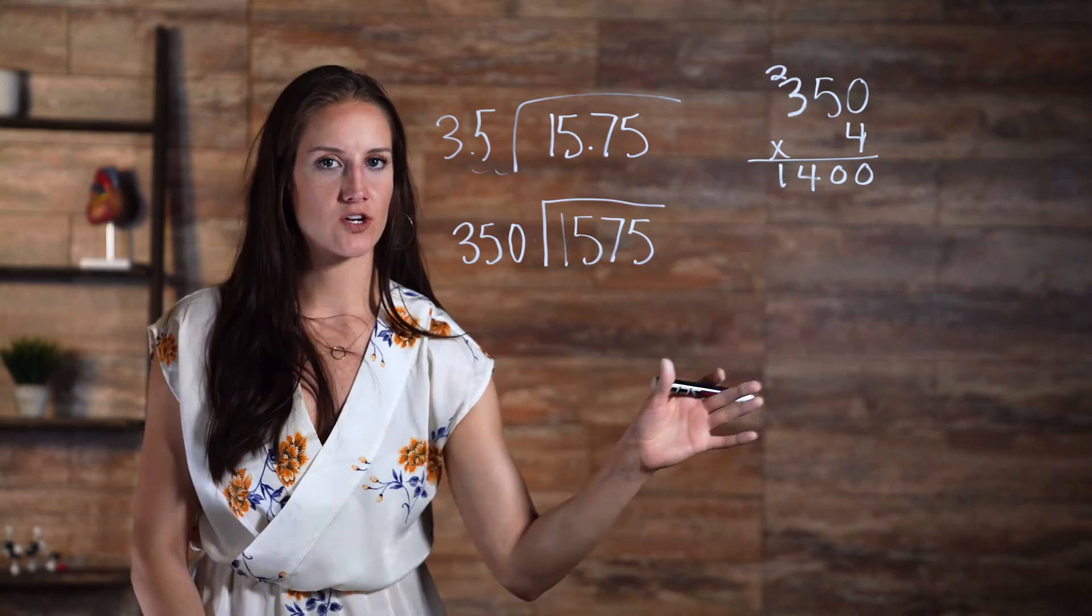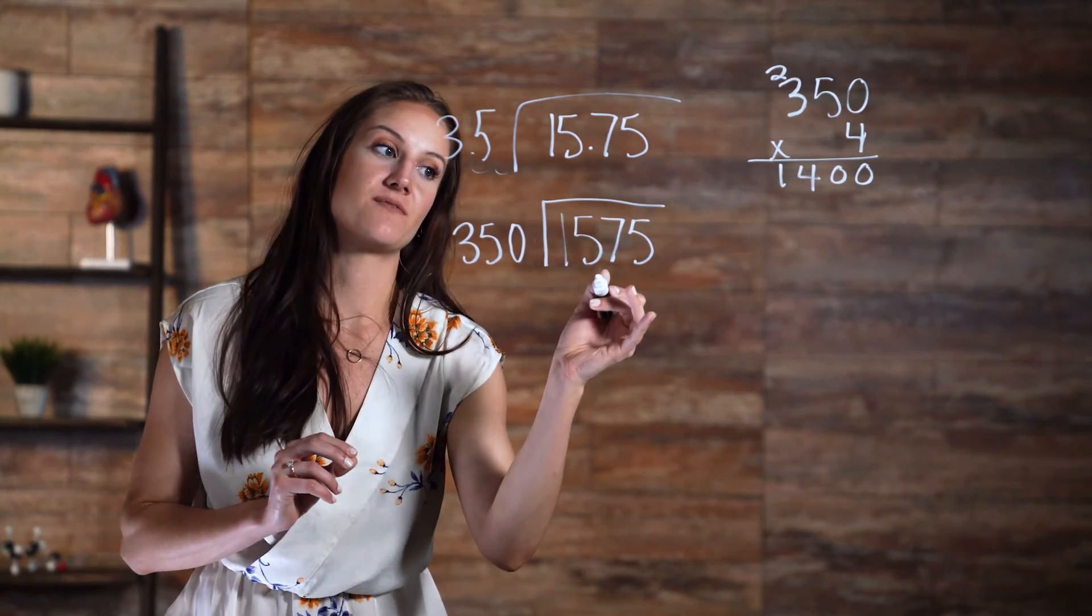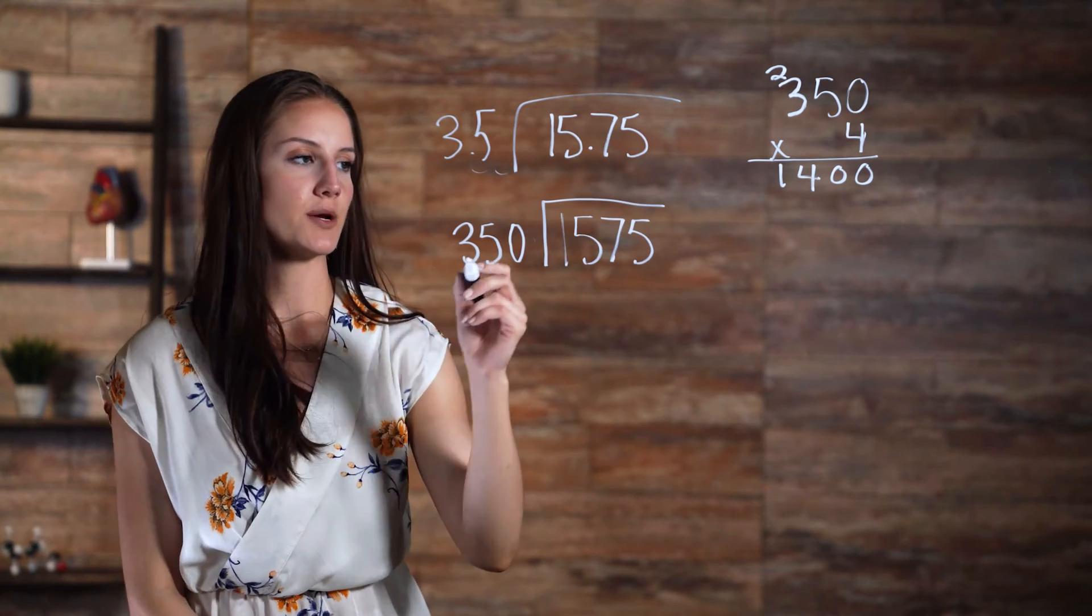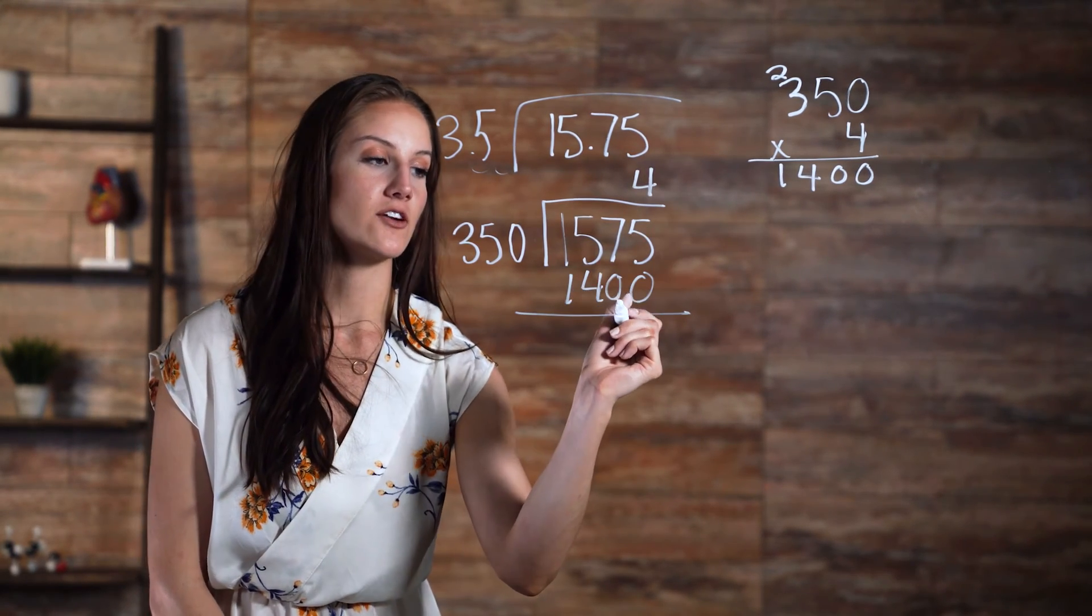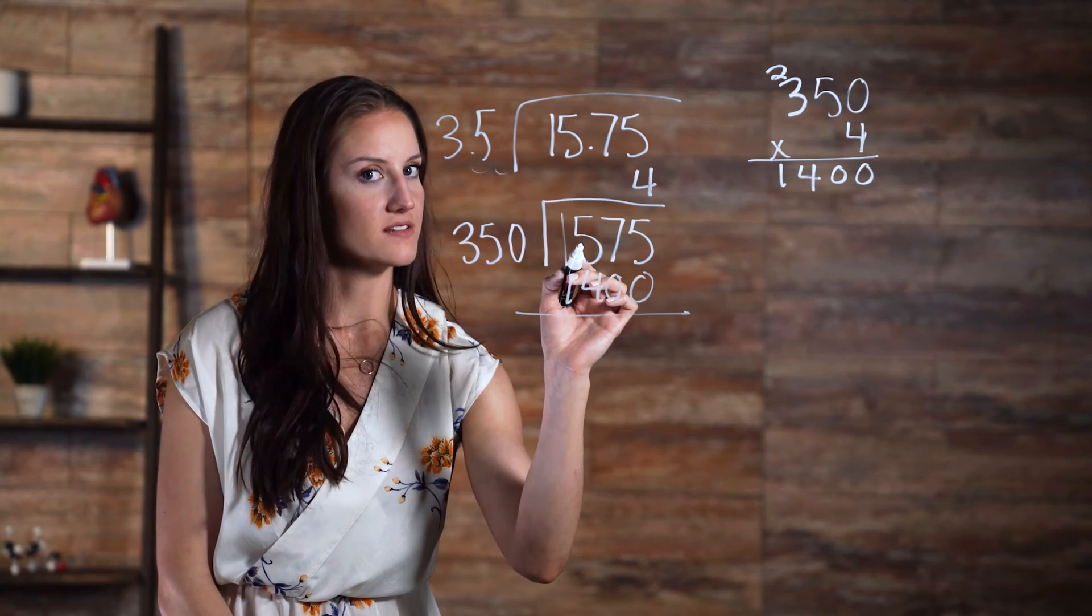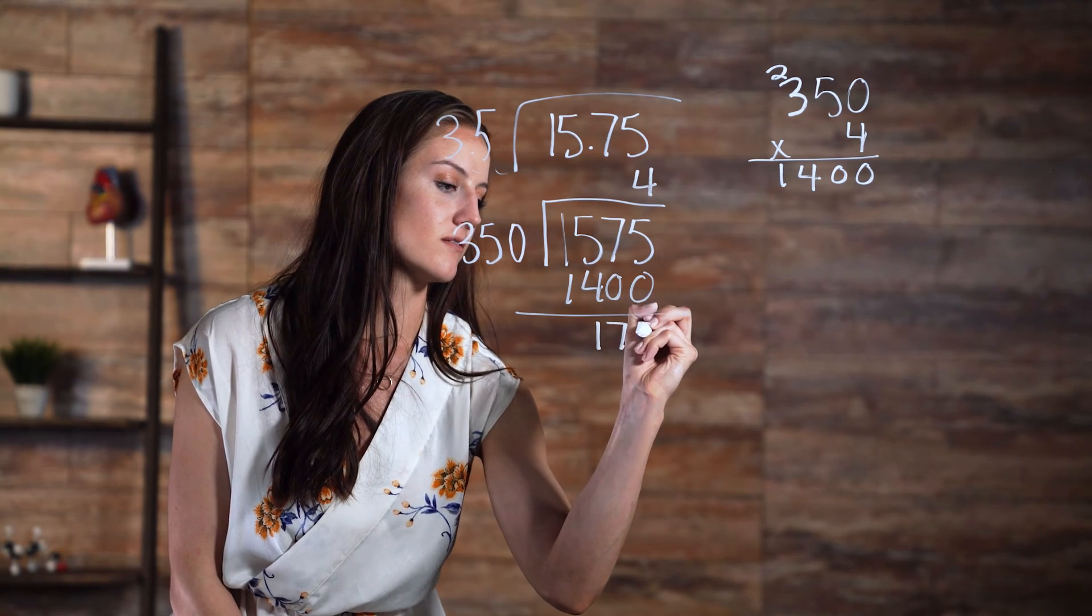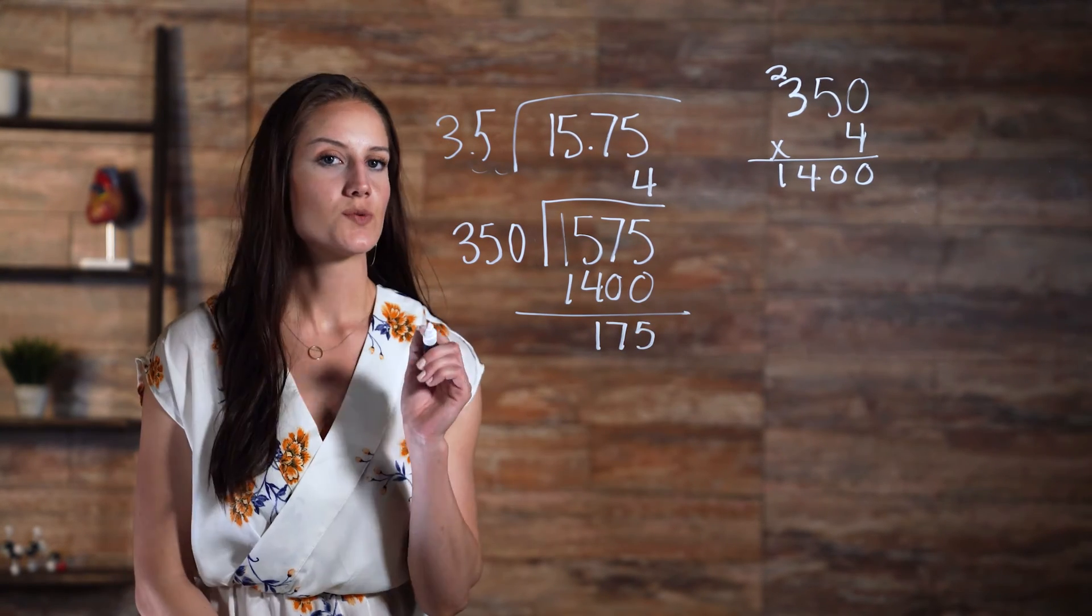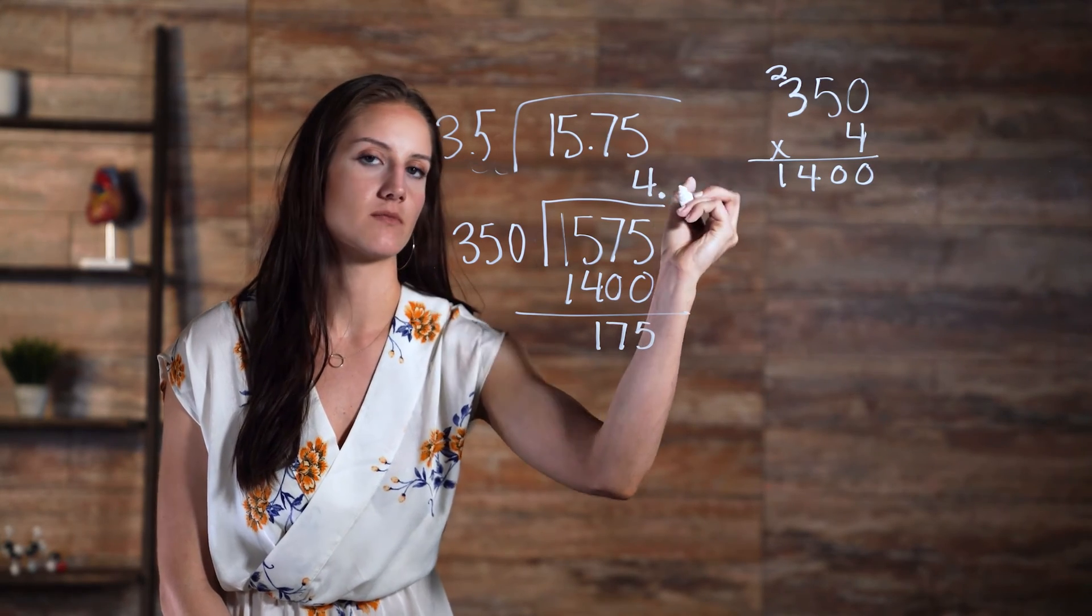So then we have 1,400, which is the best fit we're going to get into 1,575. So now we write 4 above our 5, so now we have 1,400 being subtracted from 1,575, which leaves us with 175 left over. So now we want to be sure to add a decimal after the 4 on the top as well.